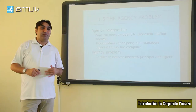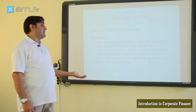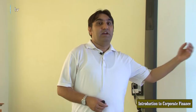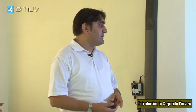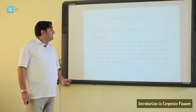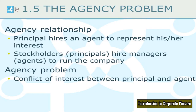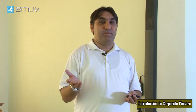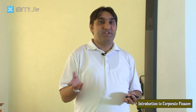What is lost in this situation is called agency cost for the company. For example, a large investment may position the firm well for the long term with positive cash flow, but carries risk in the short term. Owners want this investment to increase firm value, but managers' objectives may have personal costs if they accept it. This agency problem is not fully solvable due to the human factor, but companies try to mitigate it through compensation and bonus systems that motivate managers to act in the interest of increasing company and share value.